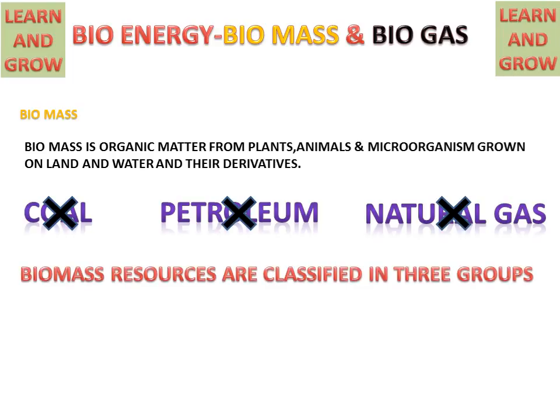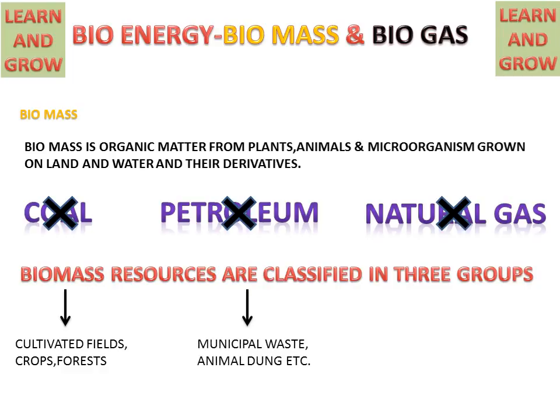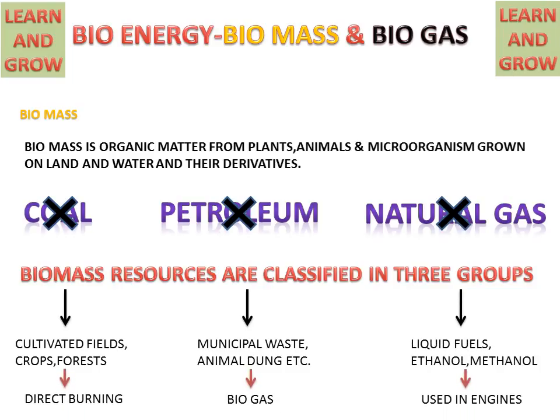Biomass resources are classified in three groups. First is cultivated fields, crops or forests. Second is municipal waste, animal dung, etc. And third is liquid fuels, ethanol and methanol.